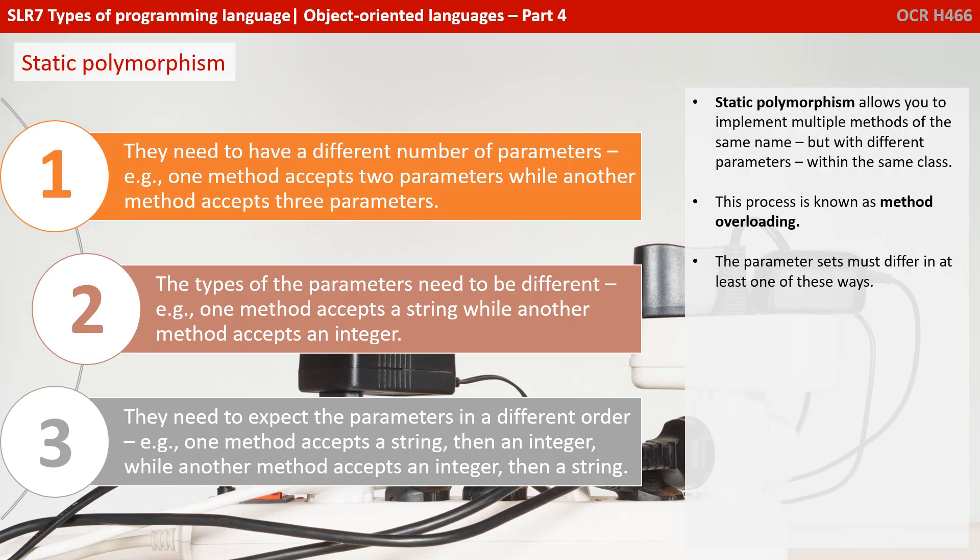In order for this to work, the parameter sets must differ in at least one of these ways. Either there needs to be a different number of parameters — e.g. one method accepts two parameters while the other accepts three. The types of the parameters need to be different, so one method accepts a string while the other accepts an integer. Or they need to expect the parameters in a different order, so one method accepts a string followed by an integer while a different one accepts an integer followed by a string. This last one is not considered very good practice because it can cause quite confusing programs.